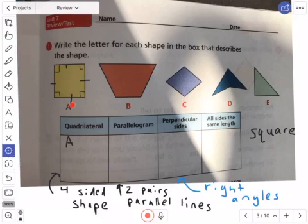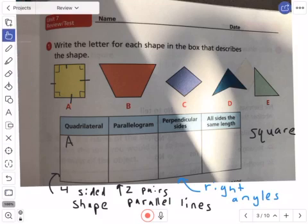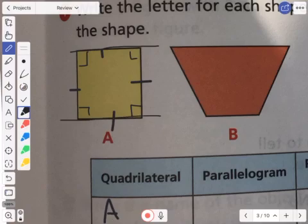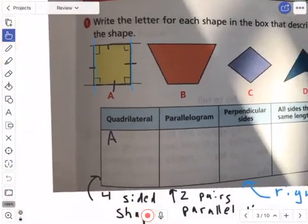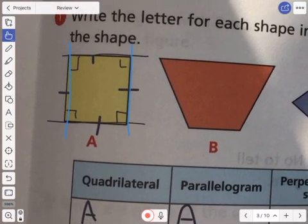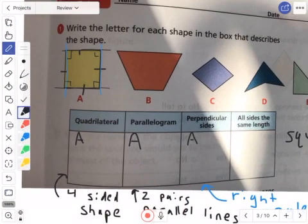Back to this first shape here, which I'm calling a square. Two pairs of parallel lines. Does it have two pairs of parallel lines? Well, the top and the bottom are parallel. That's one pair. Left side, right side, parallel. Yeah, two pairs. So, I can also write A in this one. Perpendicular sides, does it have right angles? What we already talked about. Yeah, it's a square because it has four right angles. So A can go in that spot. And then all sides the same length. Yes, as best as I can tell. It's going to fit in that spot.